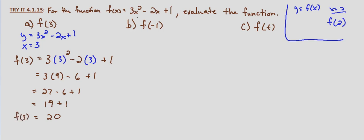Part B, we're asked to evaluate f of negative 1, so we'll write it all out this time. f of x equals 3x squared minus 2x plus 1. So f of negative 1 equals 3 times negative 1 squared minus 2 times negative 1 plus 1.